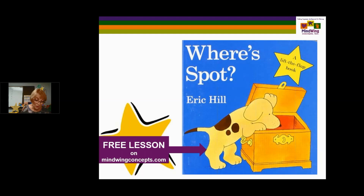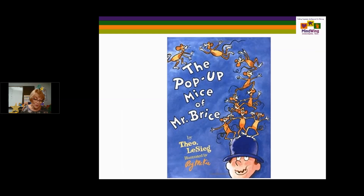The Pop-up Mice of Mr. Bryce is three-dimensional — it has flaps, pop-ups, add-ons, and pull tabs. It's very interactive. It describes 26 mice and talks about the verbs of what they like and don't like to do. So verbs are an emphasis, and likes and dislikes, which describe characters, are an emphasis.